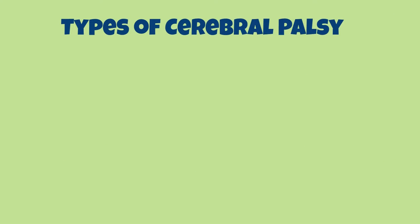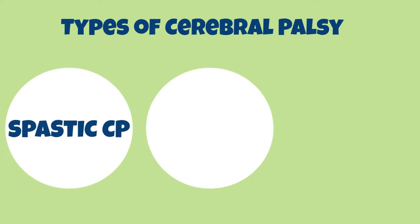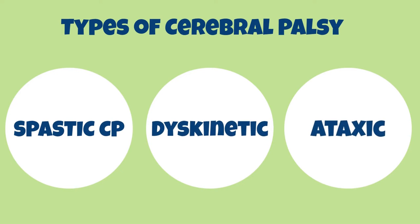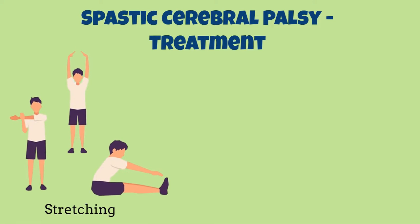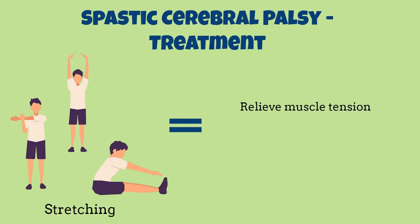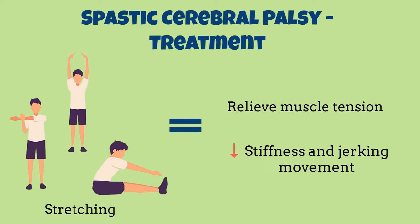The most common types of cerebral palsy are spastic, dyskinetic, and ataxic. The benefits and goals of physiotherapy can vary depending on the type of cerebral palsy. Spastic cerebral palsy is the most common type. Dedicated physiotherapy for spastic CP utilizes stretches as the main physical component to help relieve muscle tension and reduce stiffness and jerky movement.